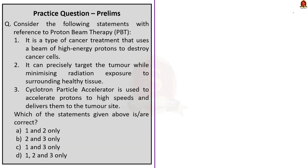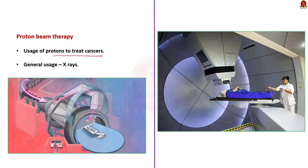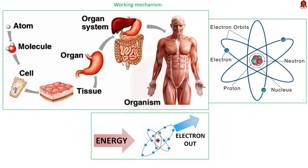Our next question is about proton beam therapy. The correct answer is option D — 1, 2 and 3 only. Proton beam therapy uses protons to treat cancers; it is a type of radiation therapy. Normally X-rays are used, but in this case protons are used. All tissues are made up of molecules, cells are made up of molecules, and molecules are made up of atoms. In the center of every atom is a nucleus. The particles orbiting the nucleus are negatively charged and called electrons. When energized protons pass near orbiting electrons, the positive charge of the proton attracts the negatively charged electrons.